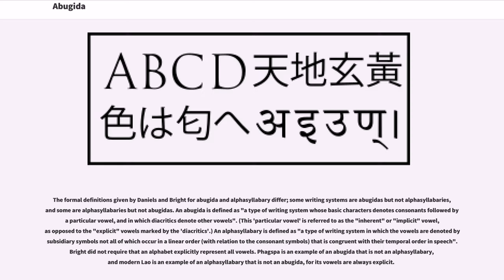The formal definitions given by Daniels and Bright for abugida and alpha syllabary differ; some writing systems are abugidas but not alpha syllabaries, and some are alpha syllabaries but not abugidas. An abugida is defined as a type of writing system whose basic characters denote consonants followed by a particular vowel, and in which diacritics denote other vowels. This particular vowel is referred to as the inherent or implicit vowel, as opposed to the explicit vowels marked by the diacritics. An alpha syllabary is defined as a type of writing system in which the vowels are denoted by subsidiary symbols not all of which occur in a linear order with relation to the consonant symbols, congruent with their temporal order in speech.